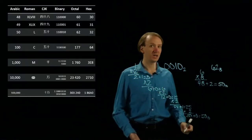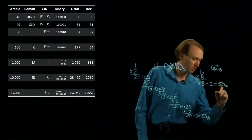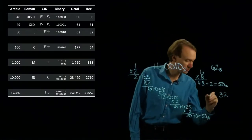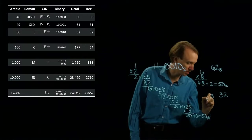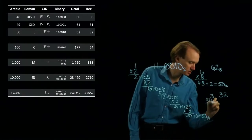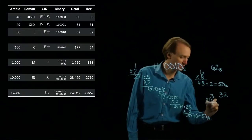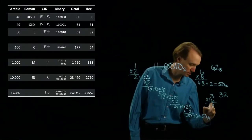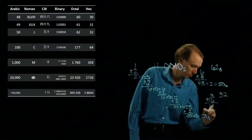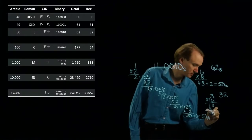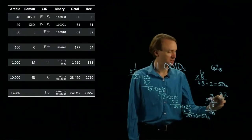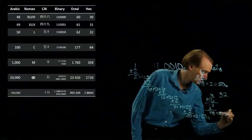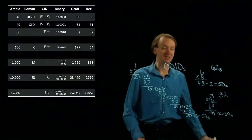Hexadecimal would be the same way. I'll start with 32 hex, take the 3, multiply by my base. This time I'll get 48, then I'll add the second digit, and I'll get 50 in base 10 again.